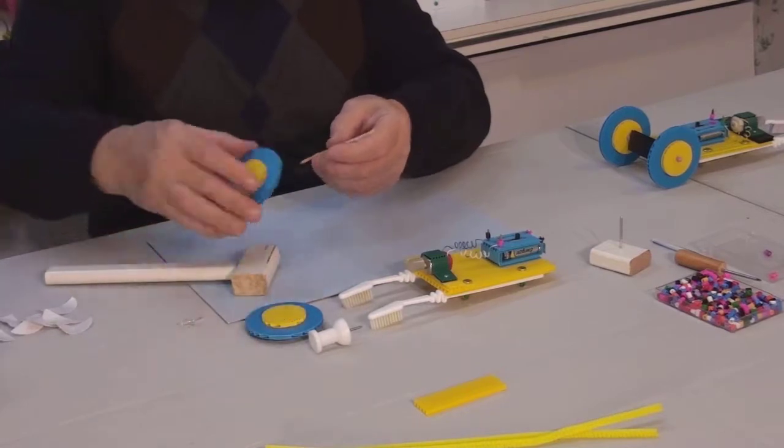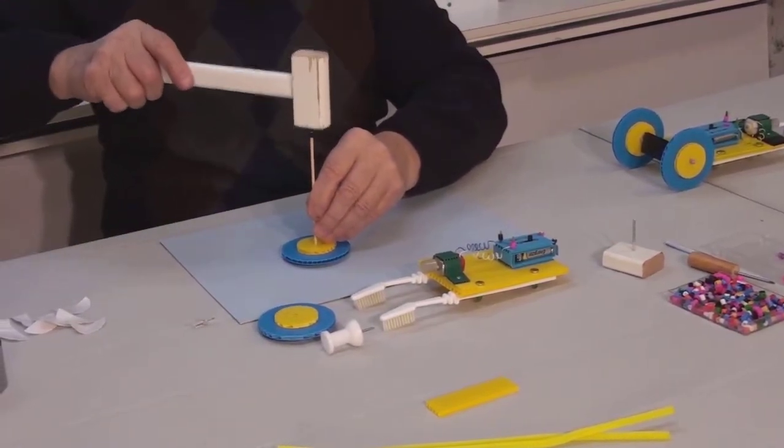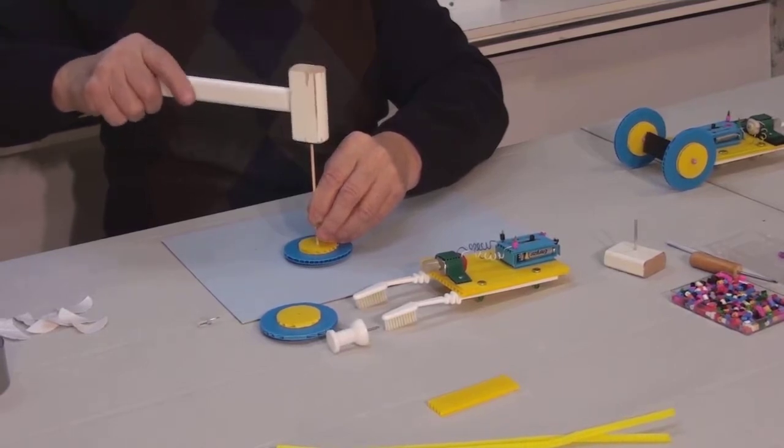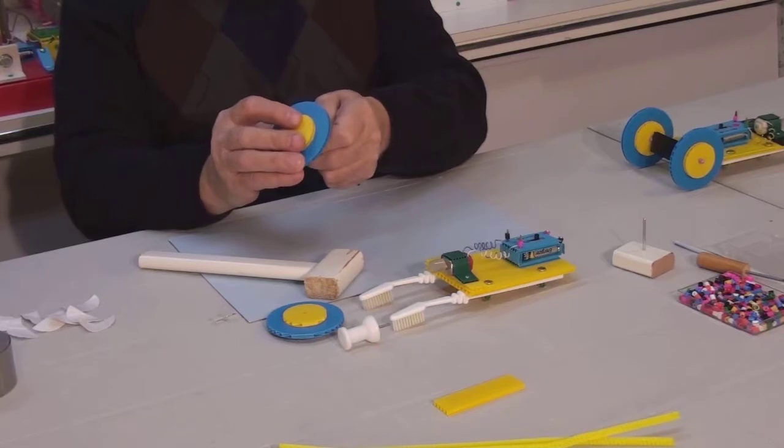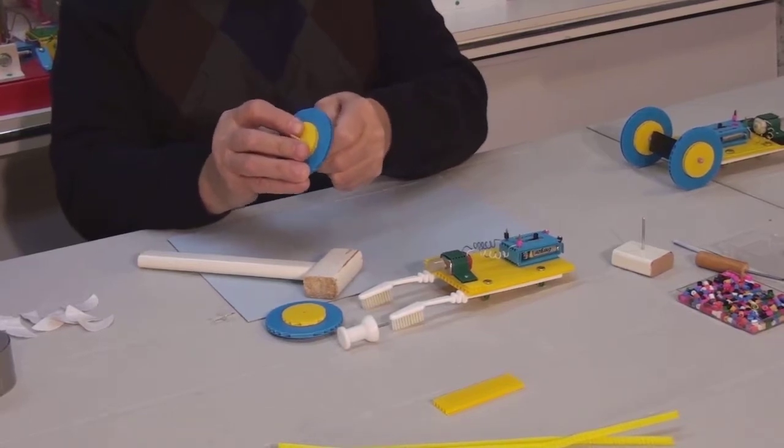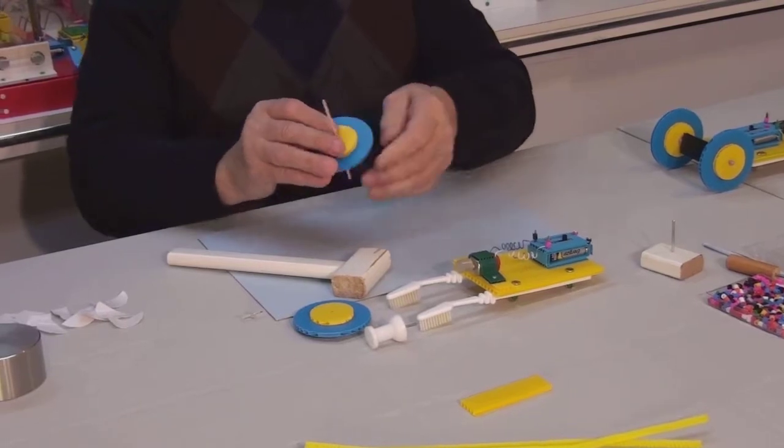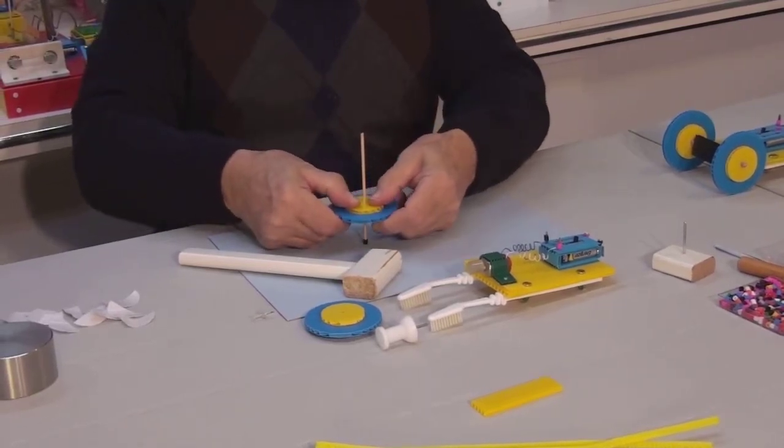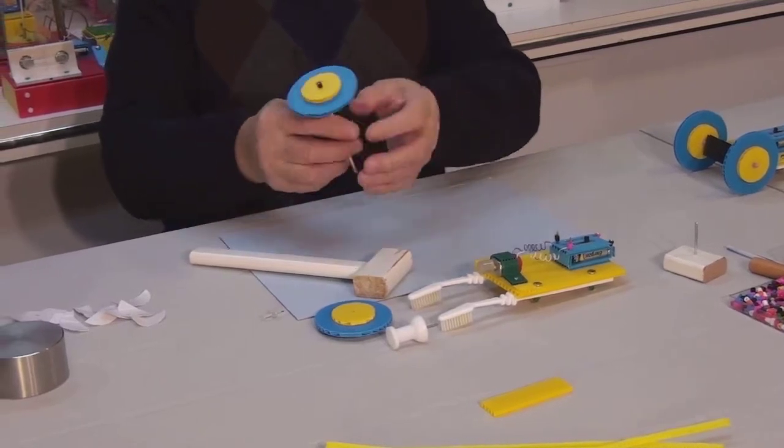Now we need to put the wheel on. It is easy to do that with the help of a hammer. Carefully slide it down the axle and apply pressure evenly in order to avoid breaking it. Check if the wheel is straight.